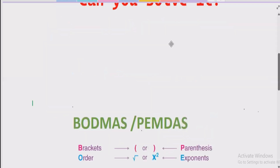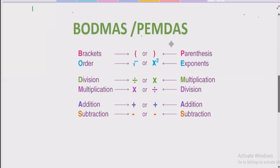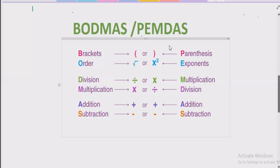Let's recall what the PEMDAS and BODMAS method is. These are the rules we follow to solve any arithmetic expression. The rule says if your expression contains any bracket or parenthesis, you have to solve that part first. Step number two is you have to solve the order or exponent part in your expression after the bracket.